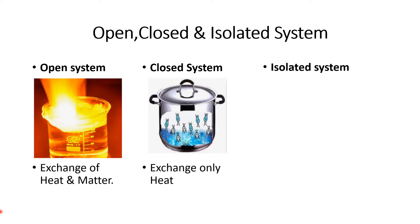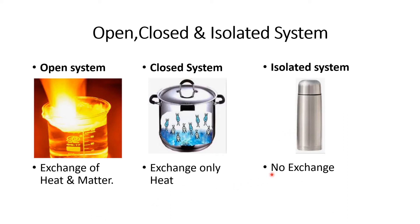The third one is isolated system. The best example is a thermoflask. In this thermoflask we can keep hot water, hot milk, or even cold things, but you cannot feel what is there inside it. There is no exchange of heat, matter, nothing — there is no exchange. That we call it as isolated system. So the three differences: open system — there is an opening, so the system and the surrounding are in contact. In closed system, whatever is there inside is not in contact with the surrounding. In isolated system, we cannot feel anything from what is kept inside the thermoflask. This is the difference.